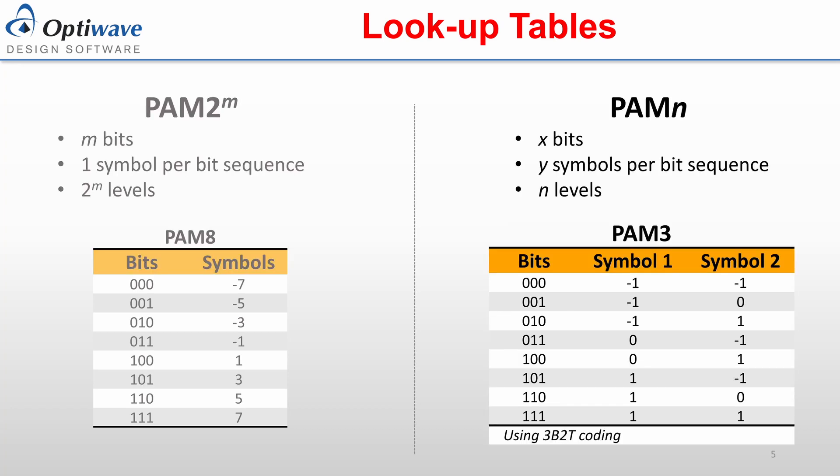Other PAM formats require two values to define: the number of bits per sequence, represented by X, and the number of symbols per sequence, represented by Y. The lookup table for these systems maps the sequence of bits to a sequence of symbols.